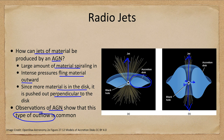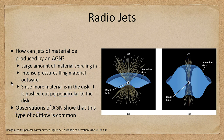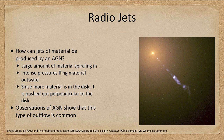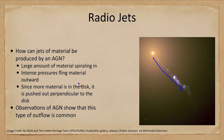We can actually see some of these jets. For example, looking at the central core of M87, we can see one of the two jets heading outward at very, very high speeds. We see this not only in M87, but in many other active galaxies and quasars as well.